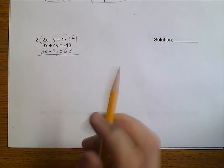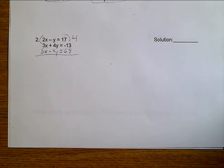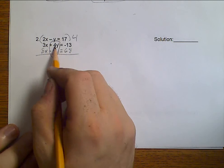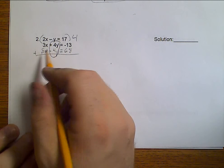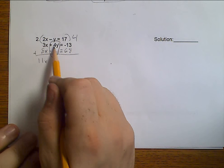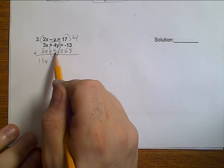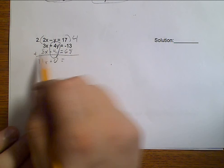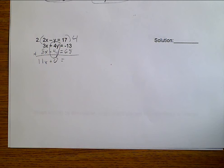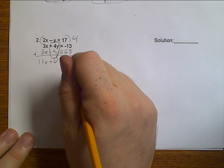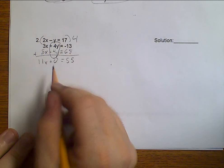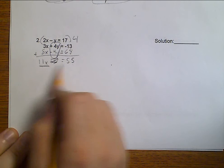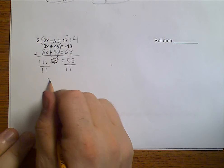Now that we've got this, we need to go ahead and eliminate. My Y's are the same. And positive and negative, if I add them, they'll go away. 3 plus 8 is 11X. 4Y plus negative 4Y makes 0. Equals, now negative 13 plus 68 is 55. The plus 0 does not matter. So, we have 11X equals 55. Divide both sides by 11 and then I get that X equals 5.